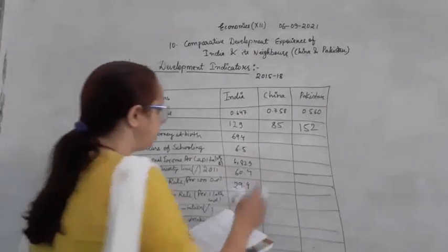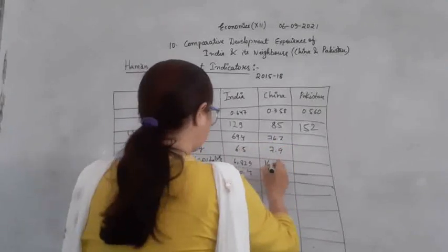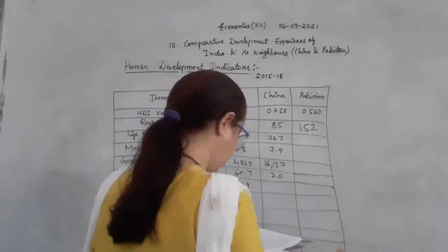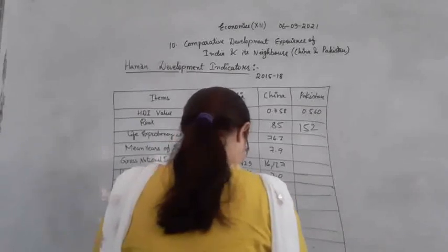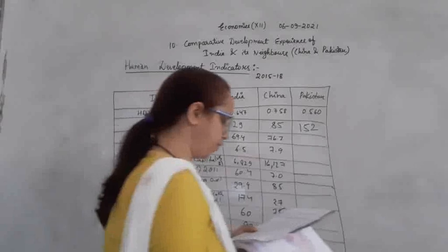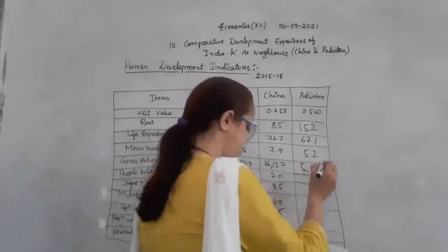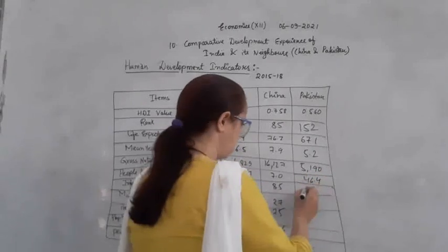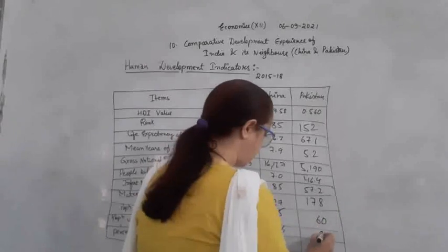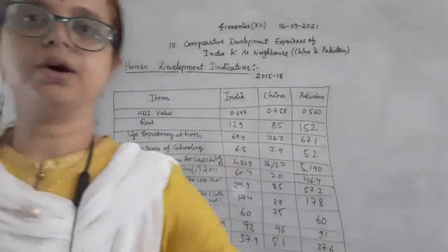For China: HDI 0.758, rank 85, life expectancy 76.7, mean years of schooling 7.9, GNP per capita 7.0 or 8.5, people below poverty line 27, access to sanitation 75, access to drinking water 96, undernourished children 8.1. For Pakistan: HDI 0.520, rank 152, life expectancy 67.1, mean years of schooling 5.2, GNP 5190, people below poverty line 46.4, sanitation 57.2, maternal mortality 178, drinking water 68, adult literacy 60 or 91, undernourished children 37.6.